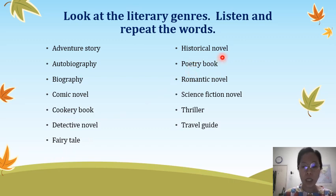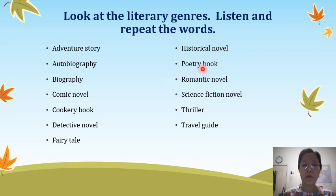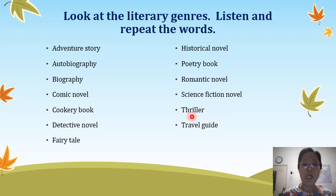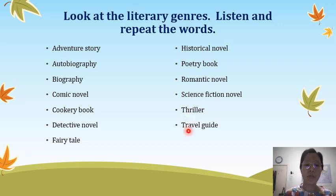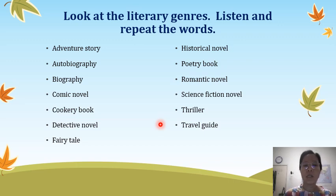Historical novel — books about past events and past people. For example, your buku sejarah is a historical novel. Poetry books are normally books about poems. Romantic novels are love and couple stories. Science fiction novel — stories about space, about the latest technology. Thriller — exciting, scary, chilling stories; for example, murder, solving a crime — that is a thriller. Travel guide — if you want to go to a new country like Japan, you refer to a travel guide to know about the weather, the people, and places to go. These are the types of books we are learning today.